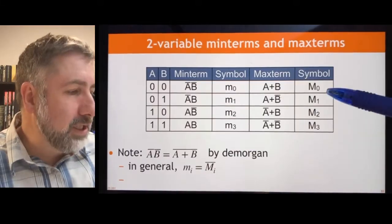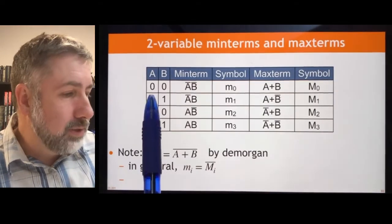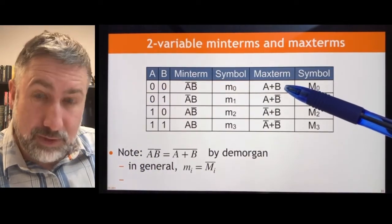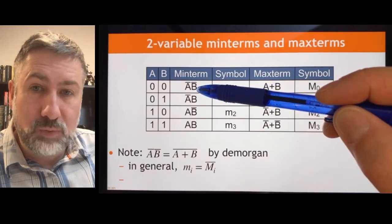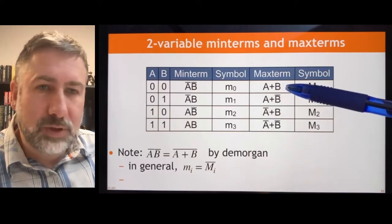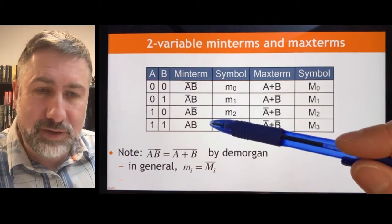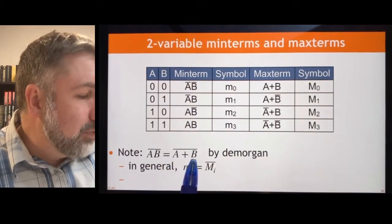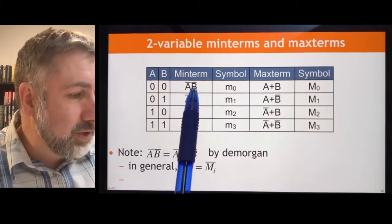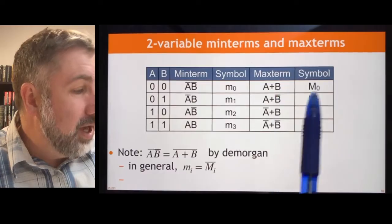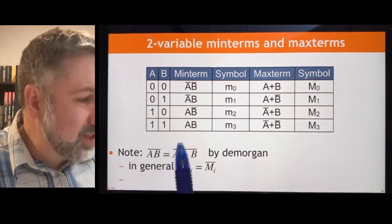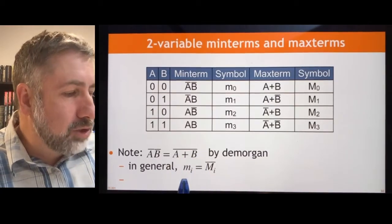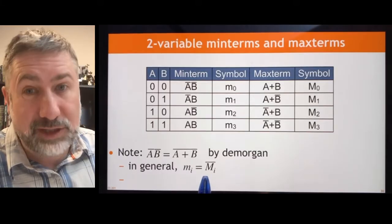Max terms are named the same way. Max term 0 corresponds to the input combination a=0, b=0, which makes this term 0. Min term 0 is the input combination that makes the term 1, and max term 0 is the input combination that makes the term 0 — note how they're opposite. If you take min term 0 and invert it, De Morgan confirms that this is true. In general, the logical value of a min term is the opposite of the logical value of the corresponding max term.